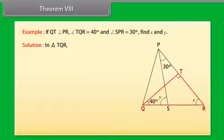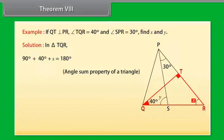In triangle TQR, 90 degrees plus 40 degrees plus x equals 180 degrees because of the angle sum property of a triangle. Therefore, x equals 50 degrees.